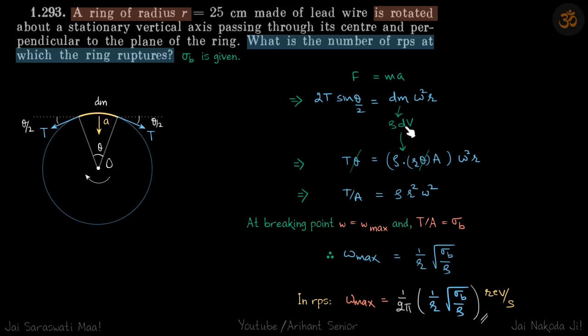Because theta is small, sine theta by 2 will be theta by 2. So T theta equals this, theta will get cancelled, and we'll get T by A is equal to rho r square omega square. So this is the stress in the ring.